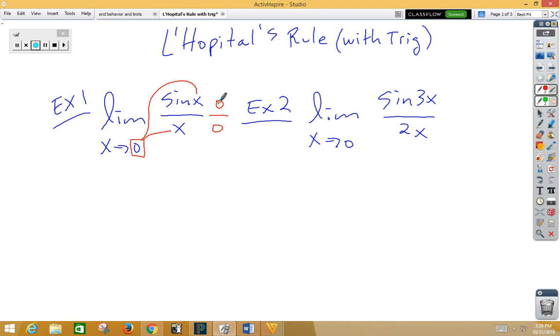Derivative of the top, derivative of sine is, of course, cosine x. Derivative of x is 1. Now if we plug in, we get cosine of 0 over 1, which is 1 over 1, which is just 1.